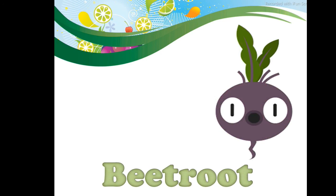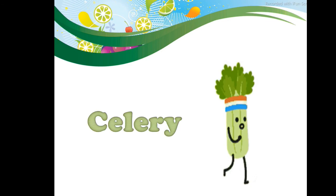Beetroot — b-e-e-t-r-o-o-t — beetroot. Celery — c-e-l-e-r-y — celery. So kids, these are the vegetable names. We repeat it once again, now we start kids.